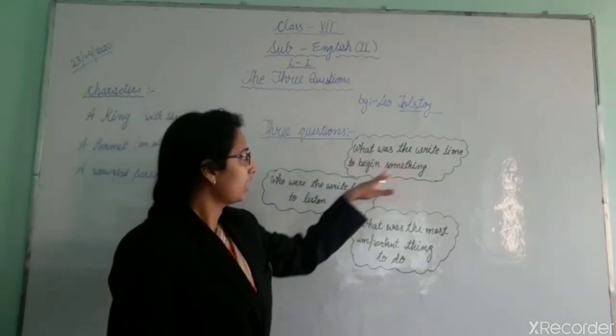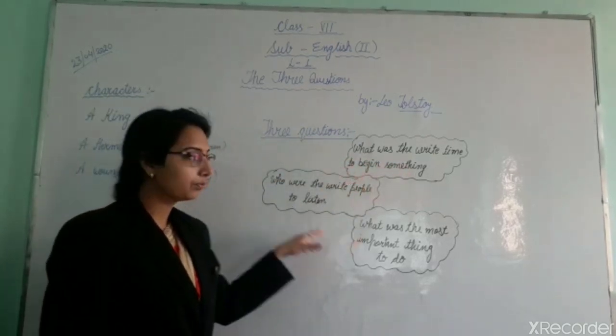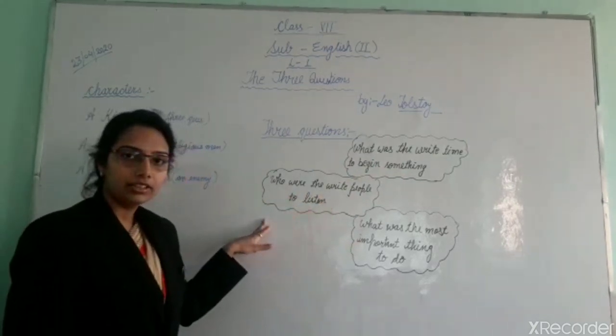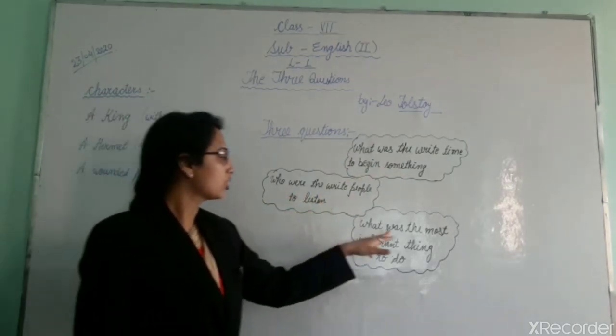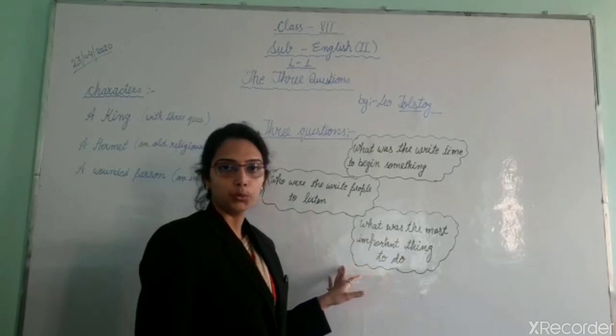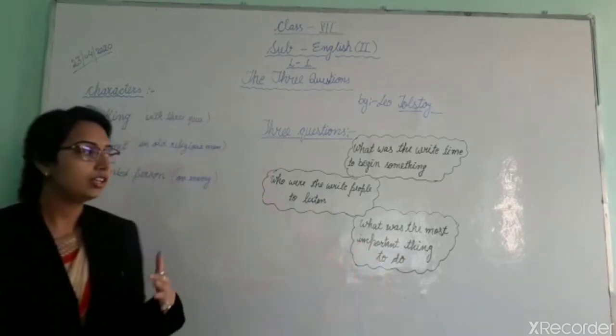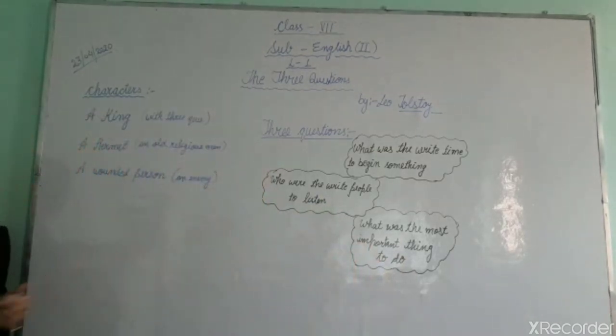These three questions are: what was the right time to begin something? Who are the right people to listen? And what was the most important thing to do? Before going beyond the story, we should know why the king wanted answers to these three questions.